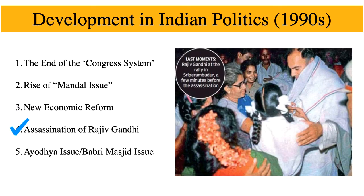The fourth development is the assassination of Rajiv Gandhi. In May 1991, Rajiv Gandhi was assassinated during an election campaign tour in Tamil Nadu. He was killed by a Sri Lankan Tamil woman who was linked to the LTTE, or the Liberation Tigers of Tamil Eelam, a militant group in Sri Lanka. In the elections of 1991, Congress emerged as the single largest party, and following Rajiv Gandhi's death, the party chose Narasimha Rao as Prime Minister.